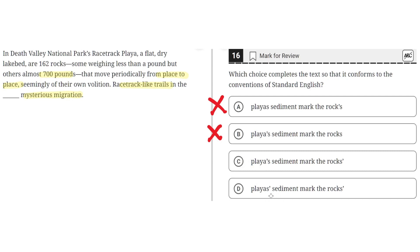Answer D: 'playas apostrophe after the s, sediment marks the rocks' apostrophe after the s.' This is incorrect, because this implies that there are multiple playas, but there is only one playa. So D is incorrect, and the correct answer is C.